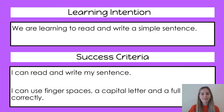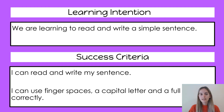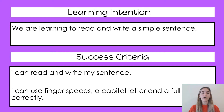Now let's have a look at our learning intention and success criteria for today. Our learning intention says we are learning to read and write a simple sentence. Our success criteria says I can read and write my sentence, and I can use finger spaces, a capital letter and a full stop correctly.